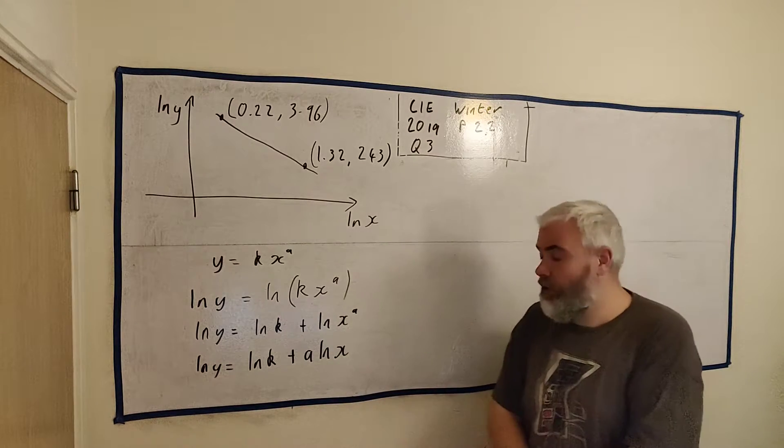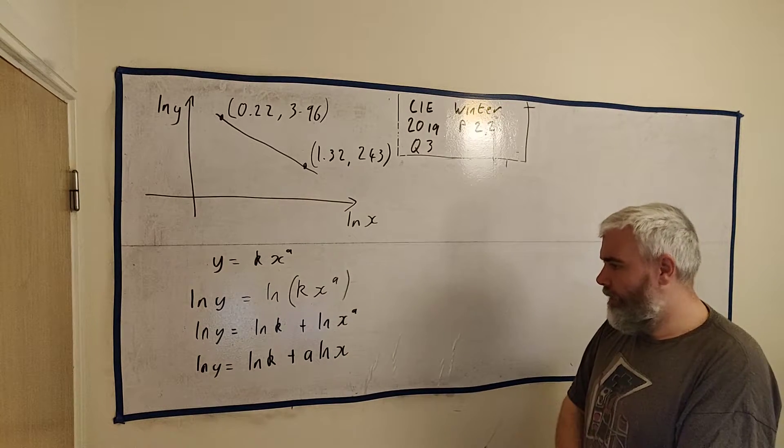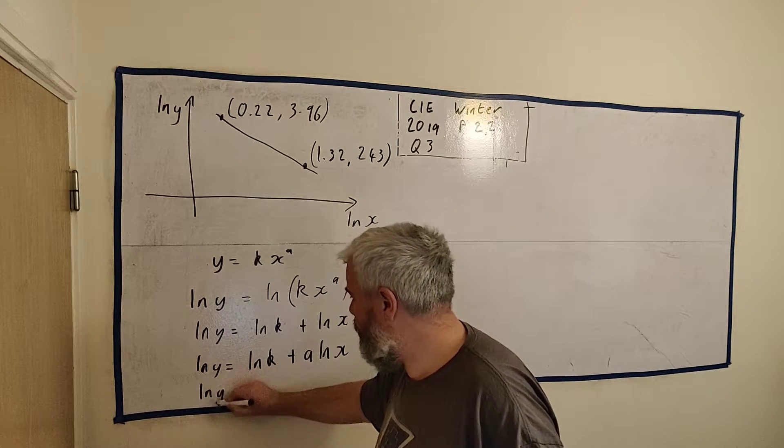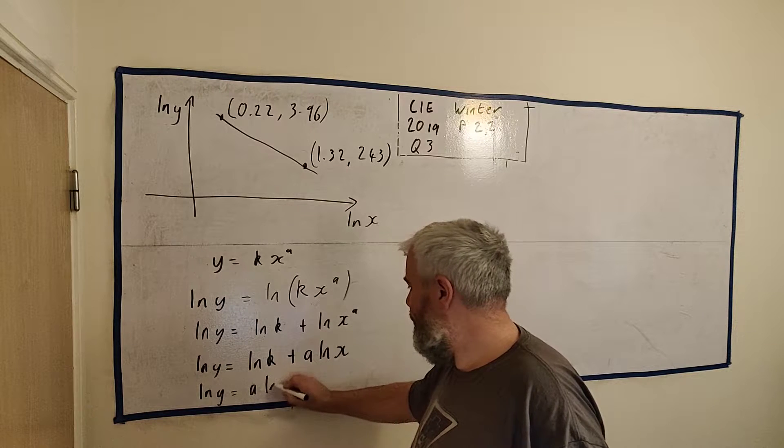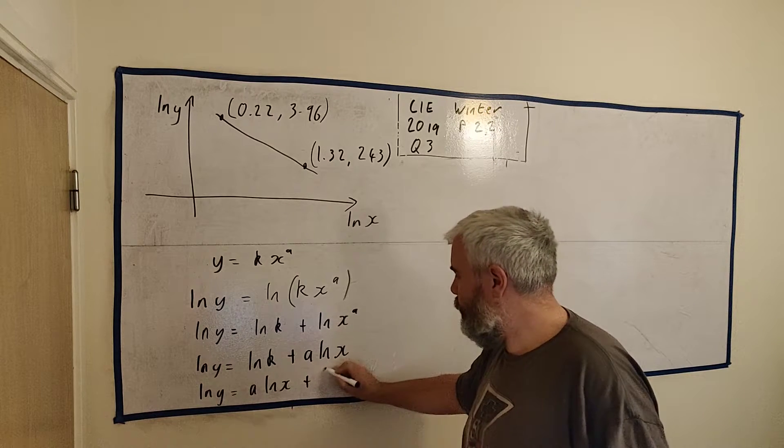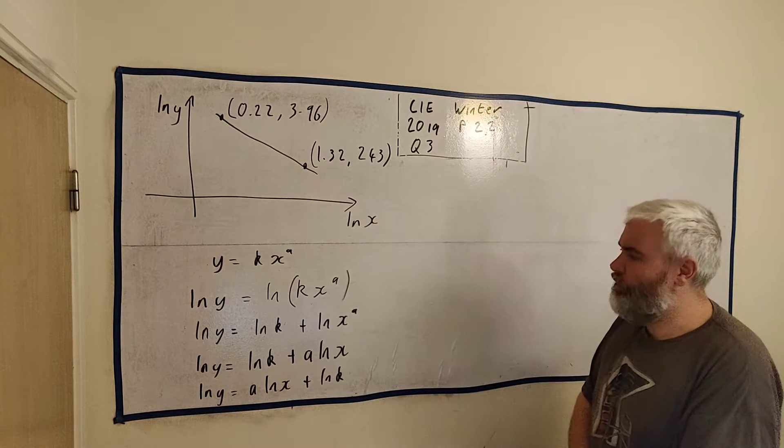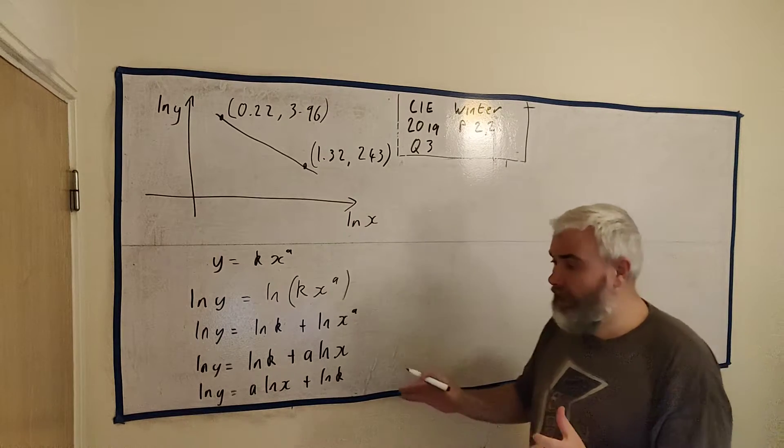Now this might not look like much. I'll write it one last time, natural log y is equal to a natural log x plus natural log k. Now I said, this might not look like much, but it actually tells me a lot. This looks like a line to me.